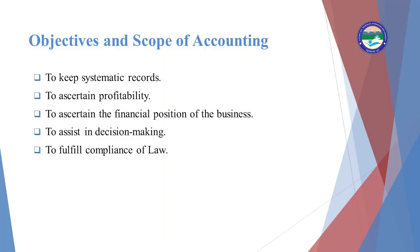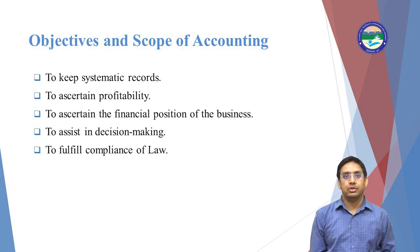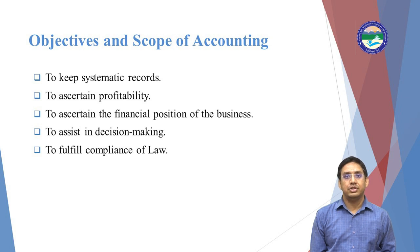Next we will discuss the objectives and scopes of accounting. The first scope is to keep a systematic record. Accounting is a systematic, sequential process. First we record all the transactions in one place called the journal, then we classify that data into different forms called the ledger. From the ledger we make the trial balance, and then we make the trading account, profit and loss account, and at last the balance sheet. Accounting follows a systematic record by date.